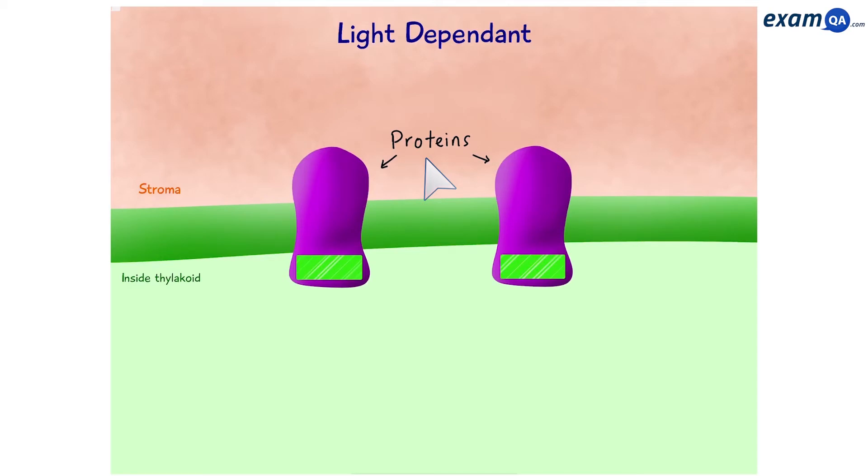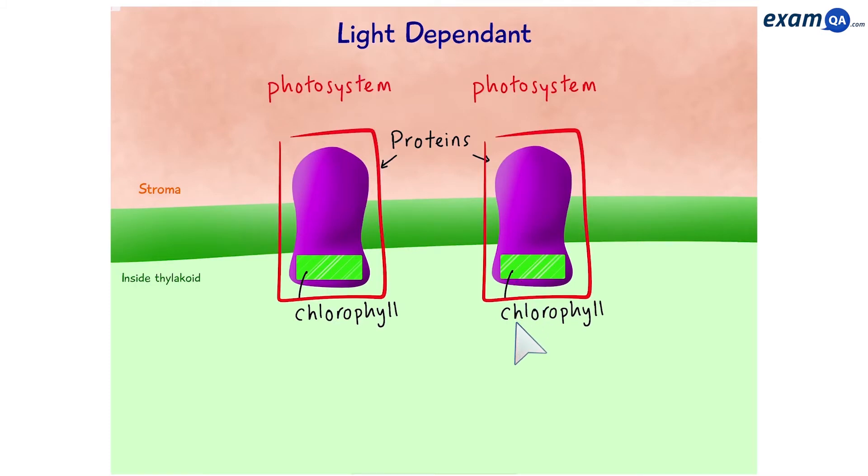This membrane is studded with membrane-bound proteins. These proteins are special because they also have a photosynthetic pigment called chlorophyll. That means each of these is known as a photosystem. For reference, we have PS2 on the left, photosystem 2, and PS1 on the right. In between them, we have another protein. However, this one doesn't have chlorophyll. So therefore, we can just call it an electron carrier.